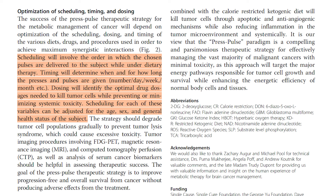Scheduling for each of these variables can be adjusted for the age, sex, and general health status of the subject. The strategy should degrade tumor cell populations gradually to prevent tumor lysis syndrome, which could cause excessive toxicity. Tumor imaging procedures involving FDG PET, magnetic resonance imaging (MRI), and computed tomography perfusion (CTP), as well as analysis of serum cancer biomarkers should be helpful in assessing therapeutic success. The goal of the press pulse therapeutic strategy is to improve progression-free and overall survival from cancer, without producing adverse effects from the treatment.